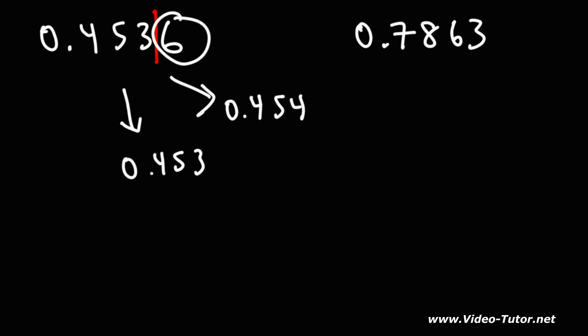If it's five or more we need to round up, if it's four or less we need to round down. Six is greater than five, it's part of the five or more group so we're going to round up. The answer is going to be 0.454.